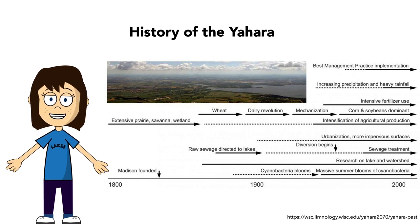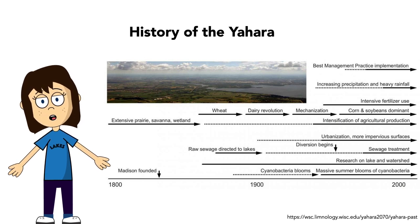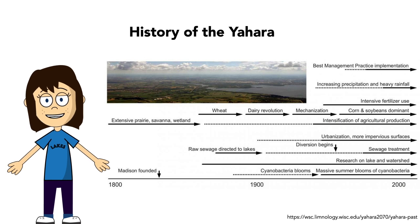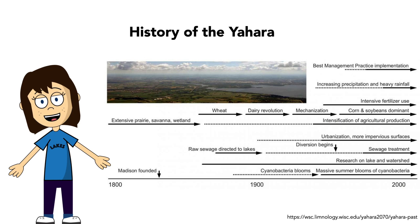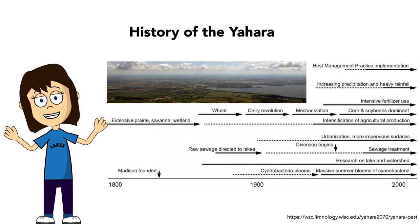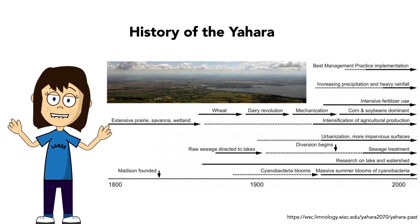Following groundbreaking research at the University of Wisconsin, dairy emerged as a way to replenish depleted soil nutrients via manure as fertilizer and to provide farmers with more reliable income. Still today, dairy operations dominate the agricultural landscape in the Yahara watershed. While dairy has provided an economic livelihood to the region, it's come at a cost to our fresh waters.